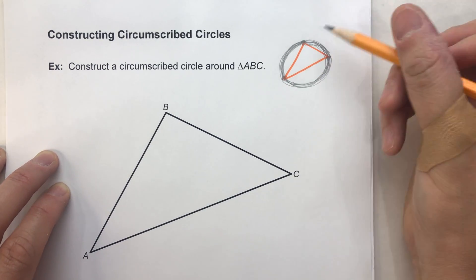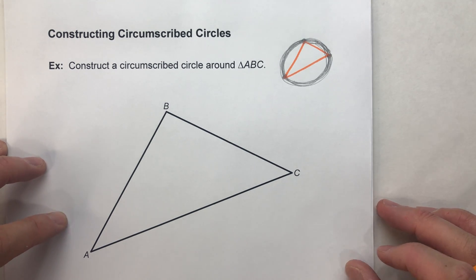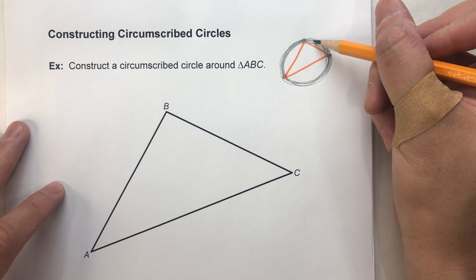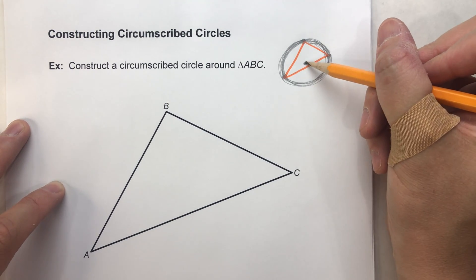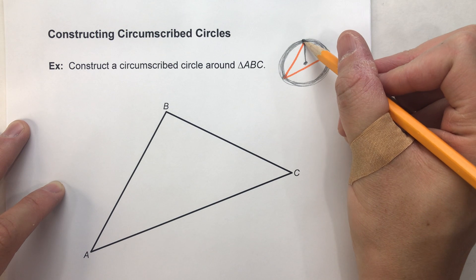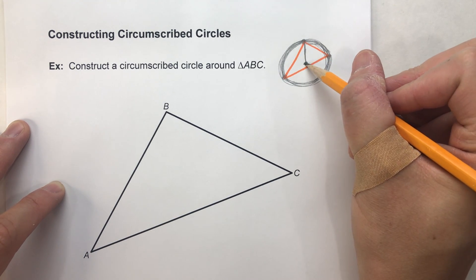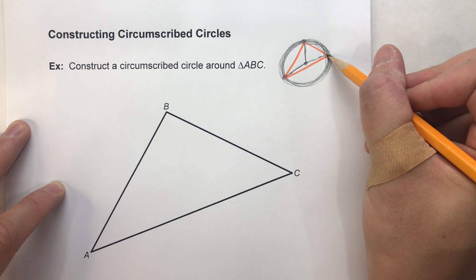Now this is kind of a hard thing to picture, but it's a lot easier to do with construction. And the reason why is because this circle has a center somewhere here. And that center needs to be equidistant to each vertex. The distance here has to be the same as the distance here, and the distance here.